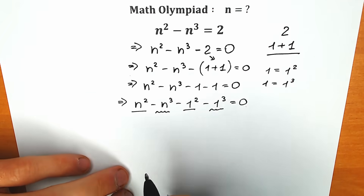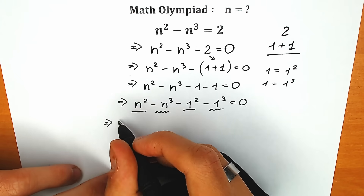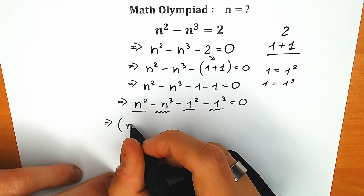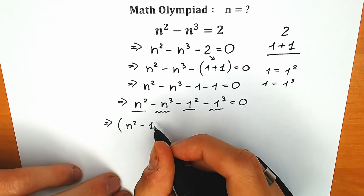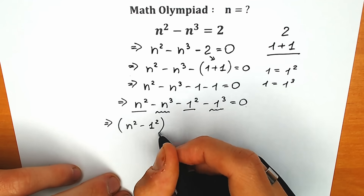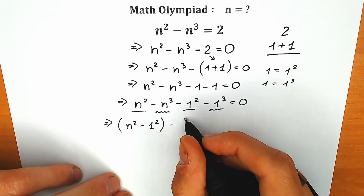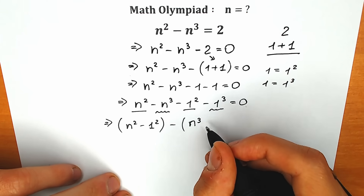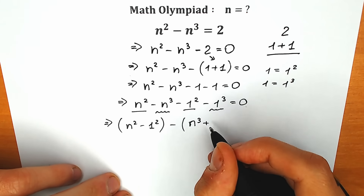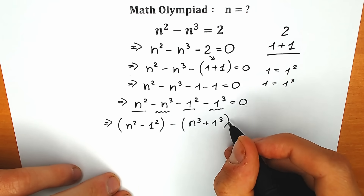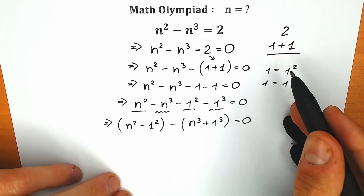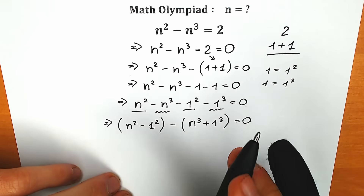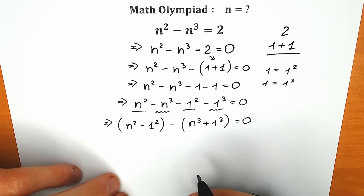So right now let's try to group it. In the first parenthesis we have n-squared minus 1-squared. In the second parenthesis we're going to group our cubes: n-cubed plus 1-cubed. I hope you understand why we chose 1 plus 1 — because we can easily group our squares and our cubes.